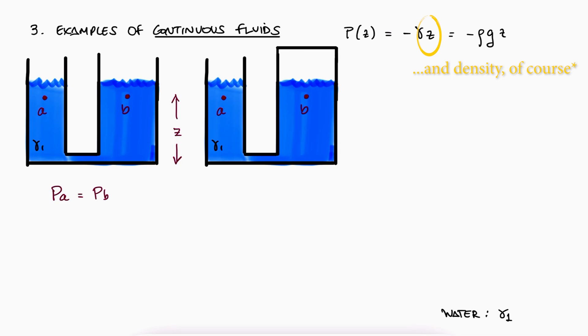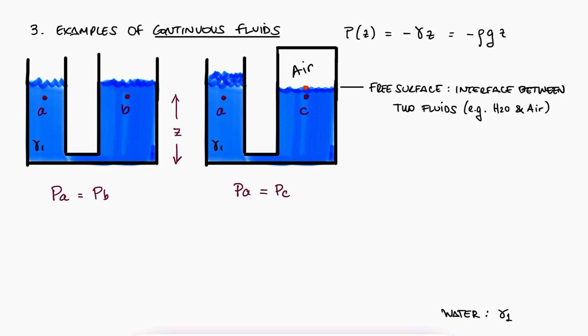If we now close one side and put some pressurized air in there, so that the free surface, that is, the interface between two fluids, in this case water and air, is lower on that side, the pressure is still the same at A and C. We could even bring these points closer to the free surface to find out that the gauge pressure of the air in the closed space is equal to gamma 1 times delta H.